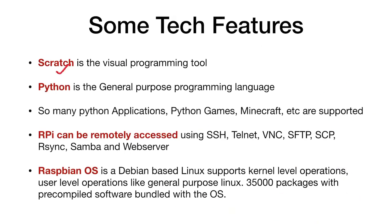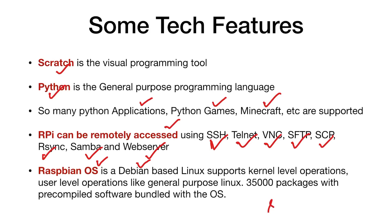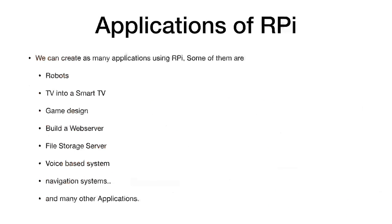Scratch is a visual programming tool, similar to Sketch in Arduino. Python is the general programming language used inside Raspberry Pi. Many applications are possible, including Python games and even Minecraft. The RPi can be remotely accessed using protocols like SSH, Telnet, VNC, FTP, SCP, rsync, Samba, or a web server. The recommended OS is Raspbian, a Debian-based system with sudo apt support and 35,000 pre-compiled packages.